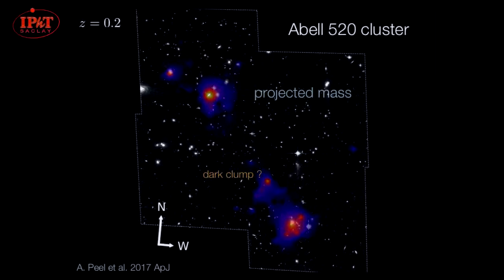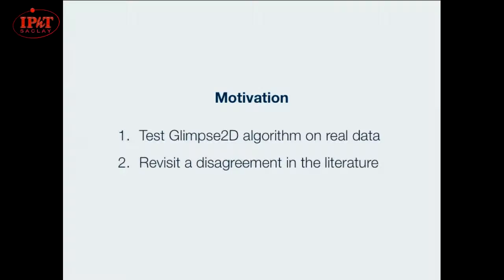I put a question mark here next to this peak because there has been disagreement in the literature about whether or not a dark clump — a dark core — has been detected at that position or near that position. A dark core is a localized, anomalously high mass-to-light ratio region that, if real, would have strong implications about our conventional understanding of dark matter as an effectively collisionless particle. Our motivation was twofold: we have a new mass mapping algorithm called Glimpse2D based on sparsity, and we also wanted to see if we could say something about this disagreement.